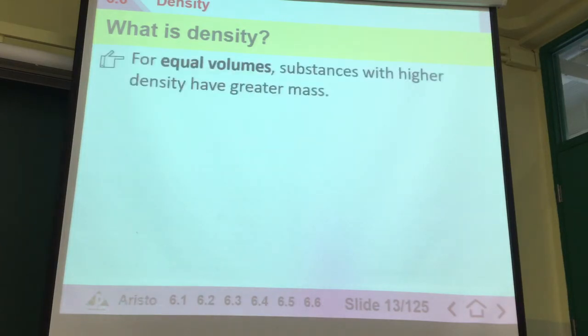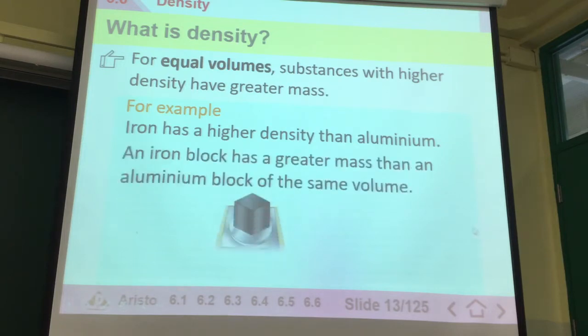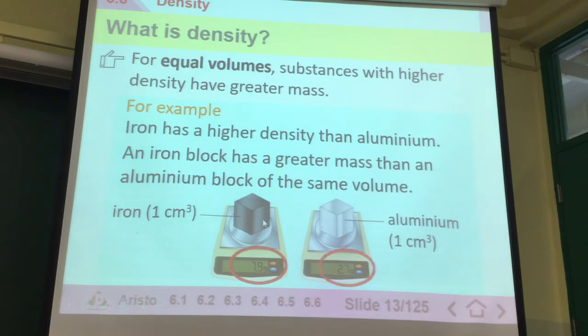What is density? We compare it in terms of equal volumes. If we have some substance, then we can measure it with the equal volumes. We can see that iron has higher density than aluminum. Because if you have the same bulk, the same size, you can tell that one is 7.9 for iron, the other one is only 2.7. This one is way heavier.